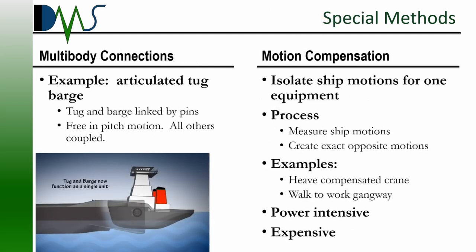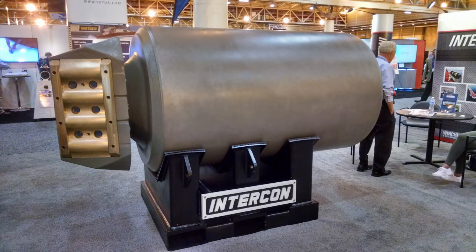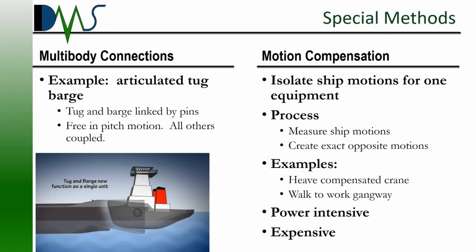Some of the more exotic methods for motion control include multi-body connections. A classic example is an articulated tug barge — a tug independent from a barge that links up with pins. These are very large structures; the pins are about two meters in diameter each and strong enough to almost completely pick up the tug. What that does is make the tug and barge share the same motions. Multi-body connections can be a very complicated problem with very unpredictable results, though they can also be very powerful.